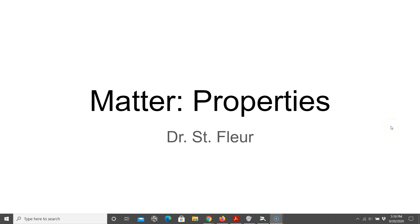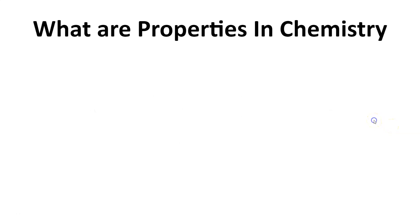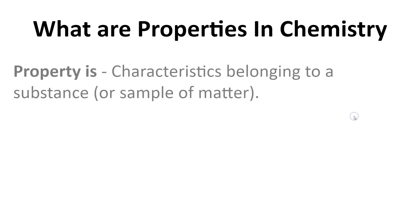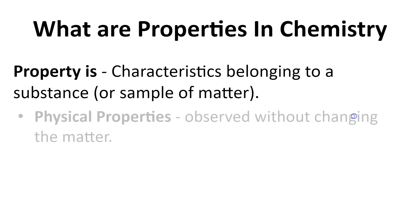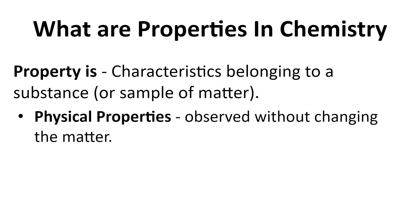Welcome to the video on matter and its properties. What are properties in chemistry? A property is a characteristic belonging to a substance or a sample of matter. There are two types of properties.